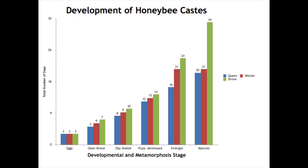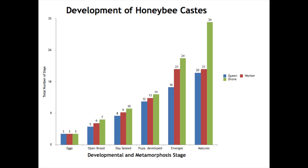Looking back at the chart for the different castes, quite remarkably the Queen takes the smallest amount of development time compared to workers and drones. The drone takes 24 days to emerge from egg through to emergence, the worker takes 21 days, and the Queen takes just 16 days. That's remarkable when you consider she's going to become the egg-laying machine of the colony, producing thousands upon thousands of honeybees through her lifetime. There's no difference in the time eggs remain as eggs — it's three days for all — and then we start to see differences in open brood, sealed brood, and emergence times.